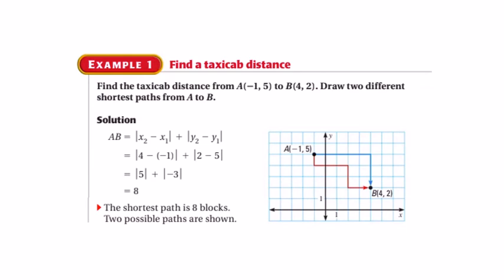Here in example one, I have coordinate A at negative 1, 5 and coordinate B at 4, 2. So draw two different paths. You can draw several different paths. As long as I don't go obnoxiously out of the way like this path would, I can draw any path I want. I can go down further and over another block and that would end up with the same exact distance.